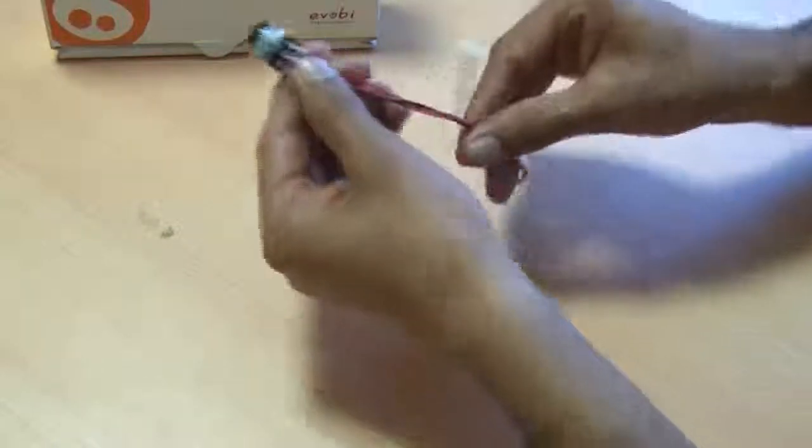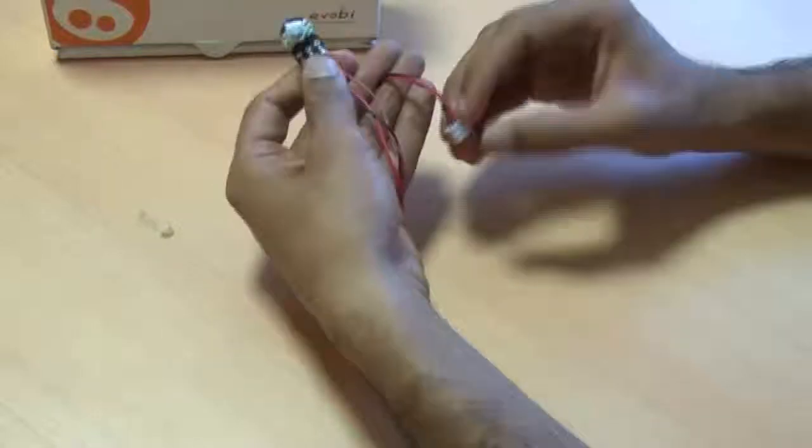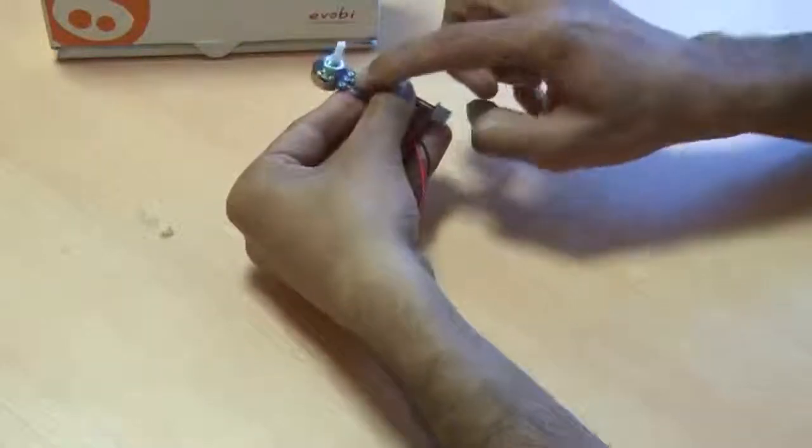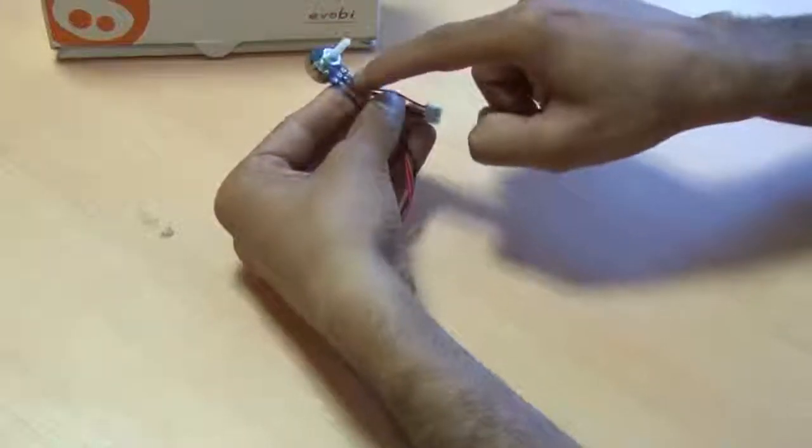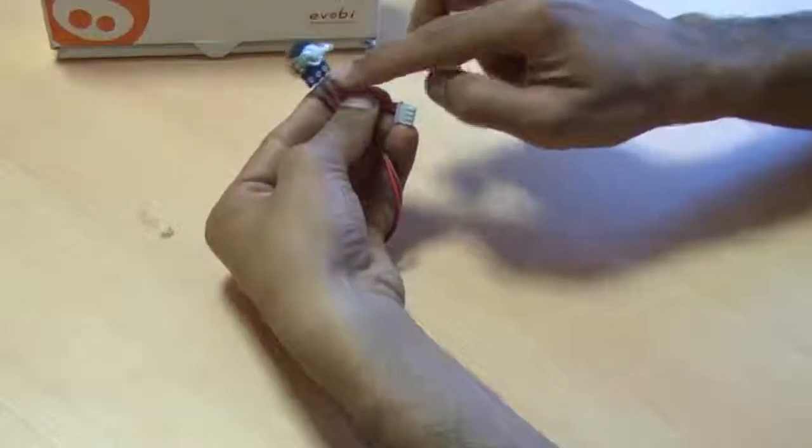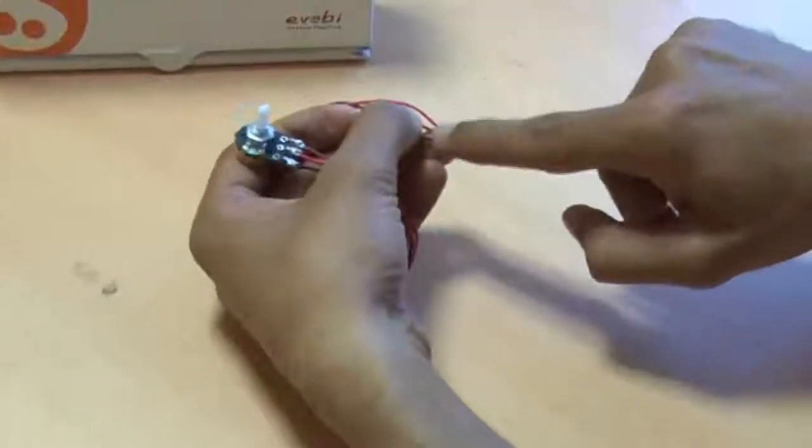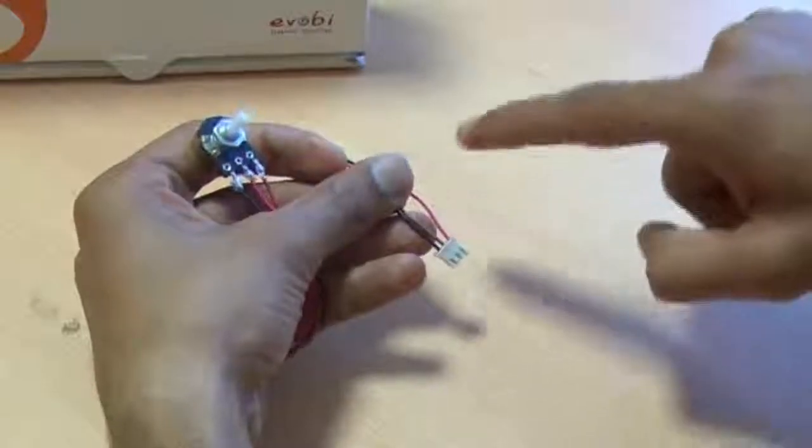So this cable connection is something like this: the data cable, the middle wire will come at the right side, the center cable will come to the right side of the rotary sensor, that is the positive wire, then the negative wire. So it is negative, positive, and the data.